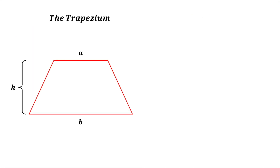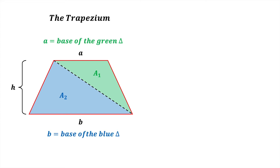The final quadrilateral we will consider is the trapezium with parallel side lengths a and b and height h. Like we did with all the other shapes, we can divide the trapezium into two triangles whose areas are a1 and a2. The base of the green triangle is a while the base of the blue triangle is b, but both triangles have a common height h. The area of the trapezium is the sum of the areas a1 and a2, or half a h plus half b h.